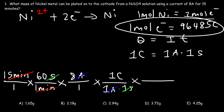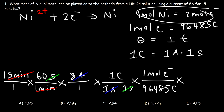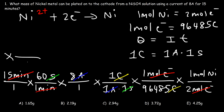Now convert from coulombs to moles of electrons: 96,485 coulombs equals one mole of electrons. Then use the stoichiometric ratio — two moles of electrons per one mole of nickel — to cancel moles of electrons. Finally, multiply by the molar mass of nickel, which is 58.69 grams per mole from the periodic table, and cancel the remaining units.